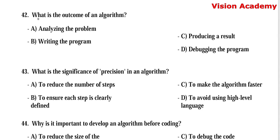Question number 42: What is the outcome of an algorithm? Option A, analyzing the problem. Option B, writing the program. Option C, producing a result. Option D, debugging the program. Here, option C, producing a result, is the correct answer.